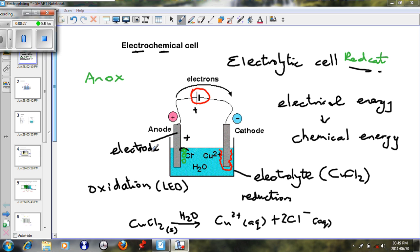We spoke about these rods which are called electrodes. We said anode is the place where oxidation takes place, so we get anox. Red cat is the electrode where reduction takes place. Reduction takes place at the cathode.